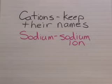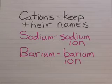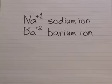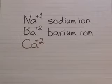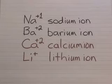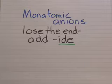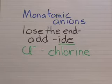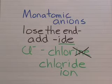How do we name these things, and what are their symbols? Cations keep their names, such as the sodium ion. Another example would be the barium ion. The ion symbols are the element symbol plus a superscript following it with its charge — so plus one, plus two. Calcium ion would be plus two. Lithium with its positive one charge is the lithium ion. For monatomic anions, or negative ions, it's a little more complex — they lose their ending and add an -IDE ending. So chlorine would lose the -INE and add -IDE to the end: chloride ion.